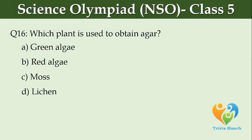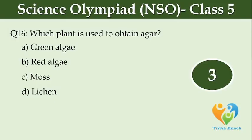Which plant is used to obtain agar? Option A, green algae. Option B, red algae. Option C, moss. Option D, lichen.